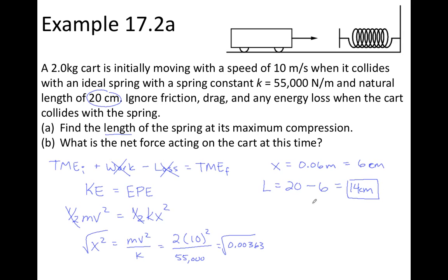For part B, what's the net force acting on the cart at this time? Well, there the force is going to be the spring force, which is calculated with k times x. The value of k is given as 55,000 newtons per meter. And so we're going to multiply this by the compression distance x. But we want to make sure that we use the value in meters so that meters cancels here and here, leaving us with units of newtons. And calculating this out, we end up getting 3,300 newtons.